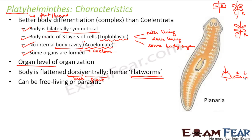Platyhelminthes can be free-living or parasitic. Parasitic means they live inside the body of another organism, cause disease, and receive nutrients from that organism. Free-living means the organism lives on its own, and is neither parasitic nor symbiotic. Many flatworms live inside the body of other organisms and cause diseases.